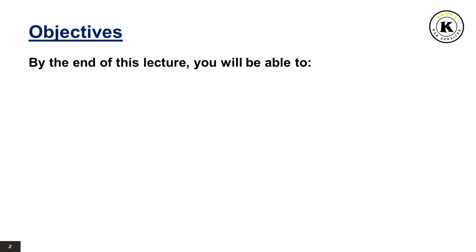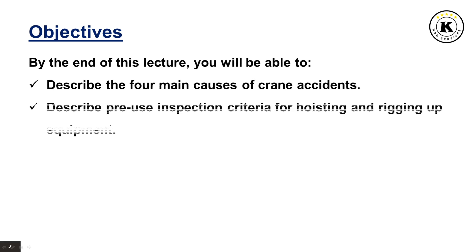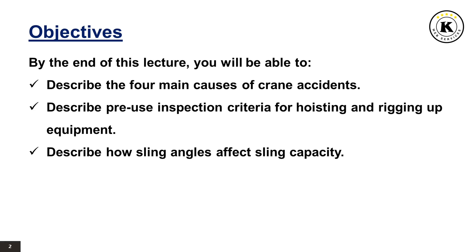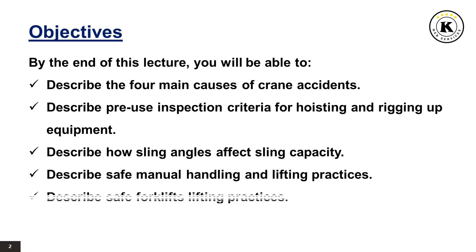By the end of this lecture, you will be able to describe the four main causes of crane accidents, describe pre-use inspection criteria for hoisting and rigging equipment, describe how sling angles affect sling capacity, describe safe manual handling and lifting practices, and describe safe forklift lifting practices.